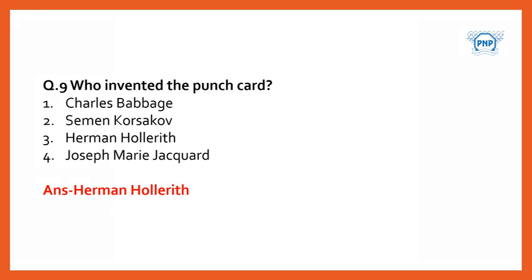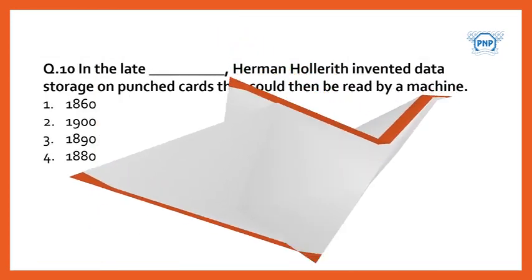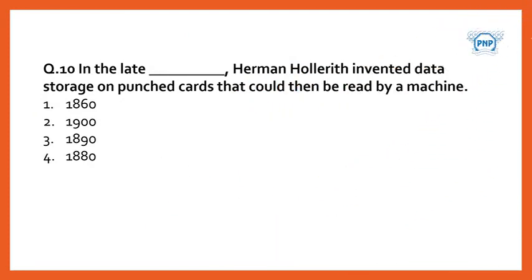In the late dash, Herman Hollerith invented data storage on punch cards that could then be read by a machine. The options given are 1860, 1900, 1890, and 1880. The correct answer is 1890.